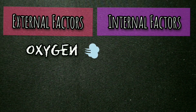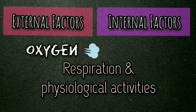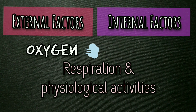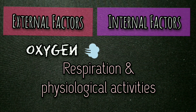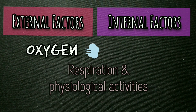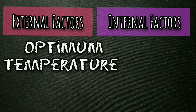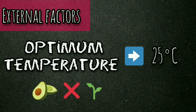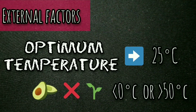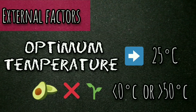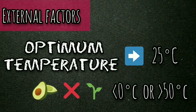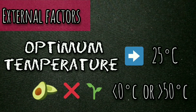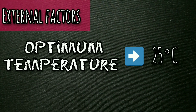The need for oxygen is greater during germination as respiration and all other physiological activities are more vigorous at this stage. Optimum temperature range varies from plant to plant. Seeds are not usually expected to germinate below 0°C and above 50°C, and the optimum often lies between 25 to 30°C.